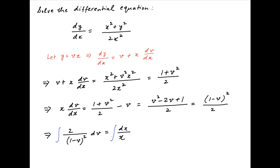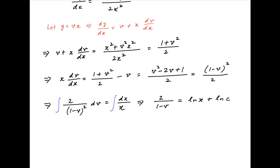Now integrating both sides, we get 2/(1 minus v) equals ln(x) plus a constant of integration. Let's call it ln(c).